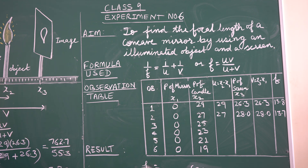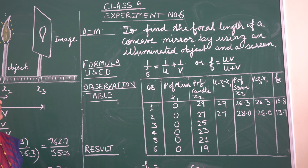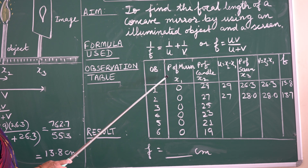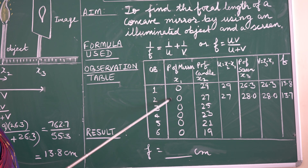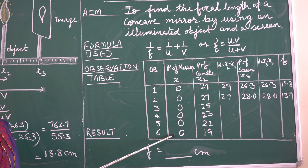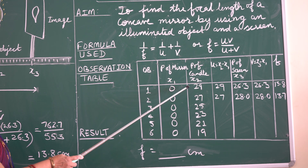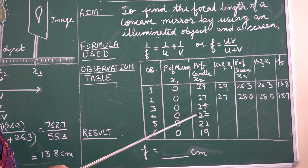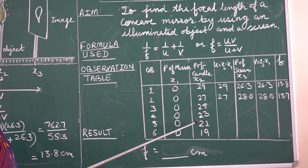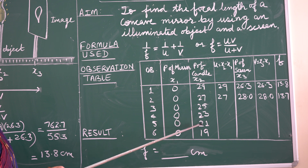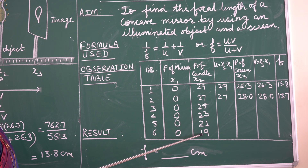This is the observation table we are going to use for this experiment. We are going to fix the position of the mirror at the zero centimeter mark on the optical bench. The candle position will keep changing depending on the observation being taken. Here we have taken positions 29, 27, 25, 23, 21, and 19.